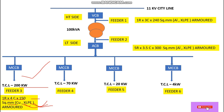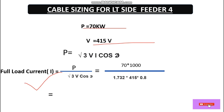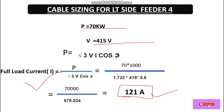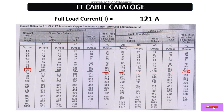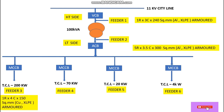Now moving to feeder four. The connected load is 70 kilowatts, voltage is 415V, and using the same three-phase power formula, the calculated full load current is 121 amperes. Looking into the cable catalog for this current, 121A falls under 148A, so a 35 sq mm cable is selected. For feeder four, the cable size is one run, four-core, 35 sq mm copper XLPE armored cable.